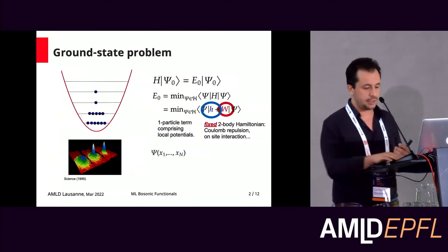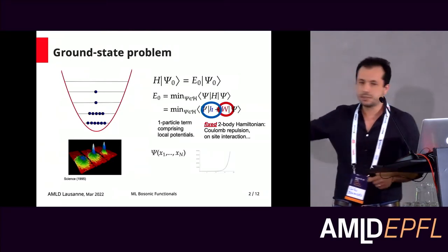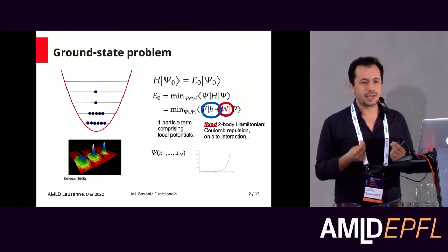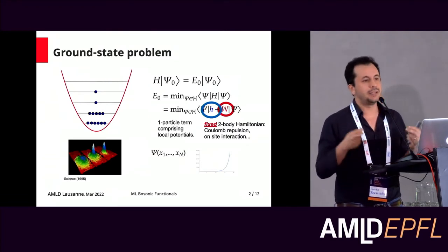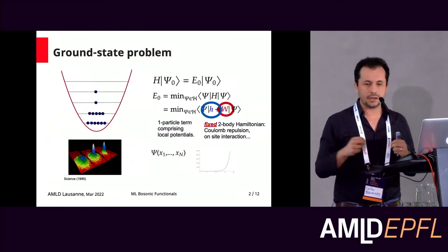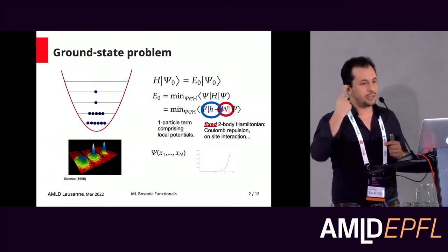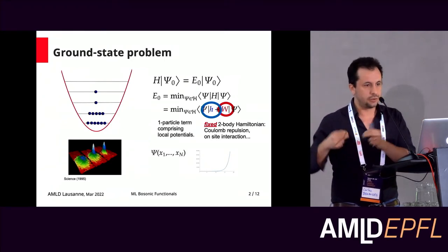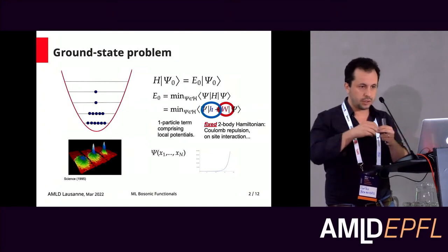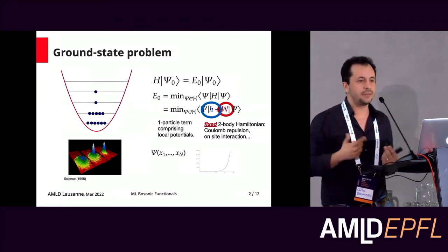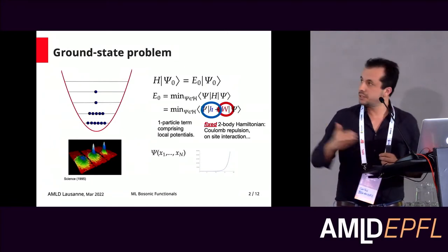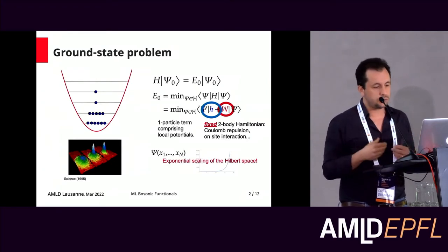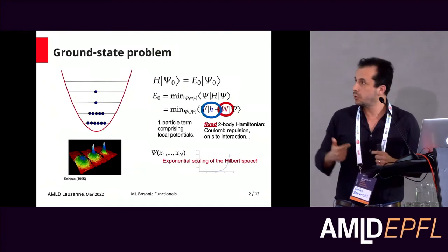One possibility is to solve this using wave functions. What appears here is the exponential scaling of the Hilbert space — the dimension of the Hilbert space scales badly with the number of particles and the sites. By 'sites' I mean the one-particle Hilbert space, or depending on your field, the orbitals, the sites, or the modes. The dimension scales badly, so this minimization is in principle impossible to do. We need some approximations or techniques to avoid this scaling.